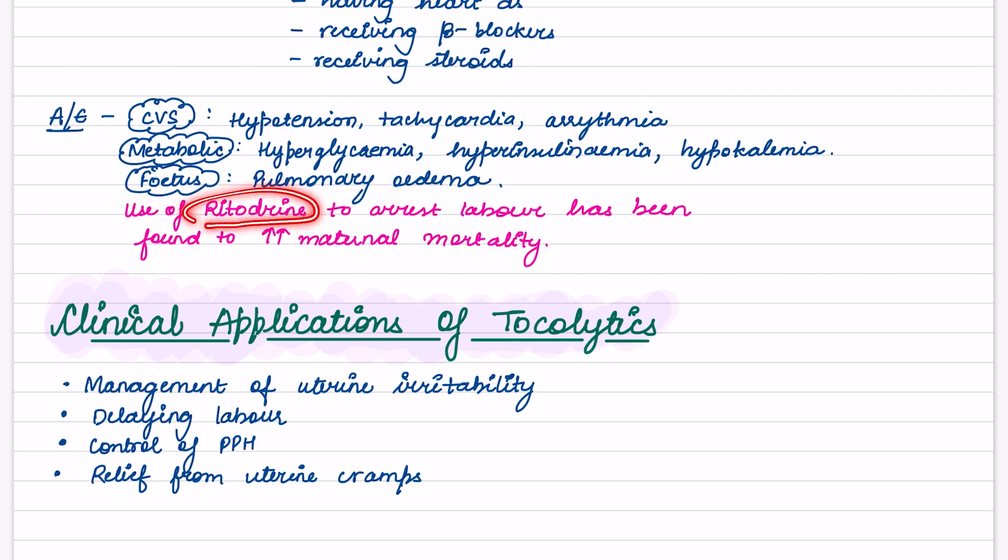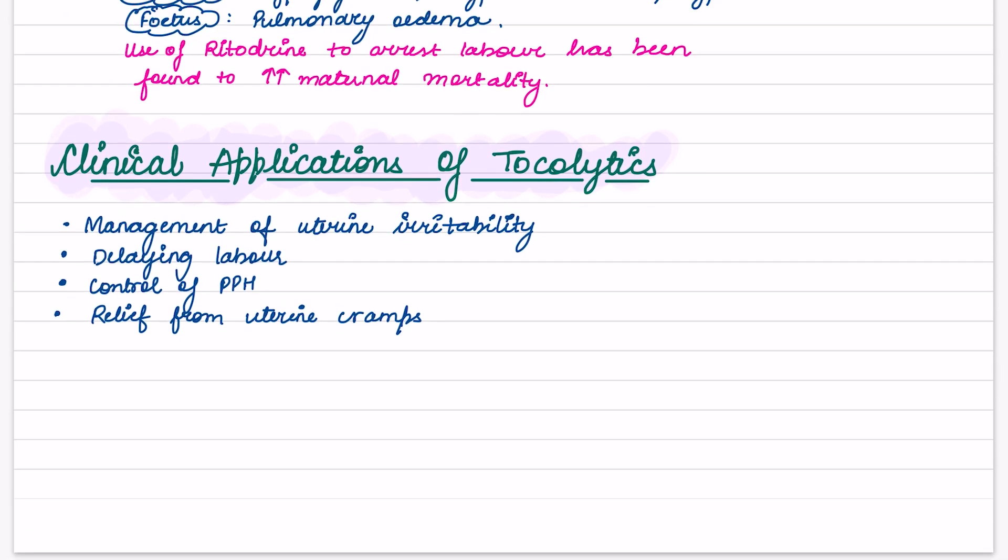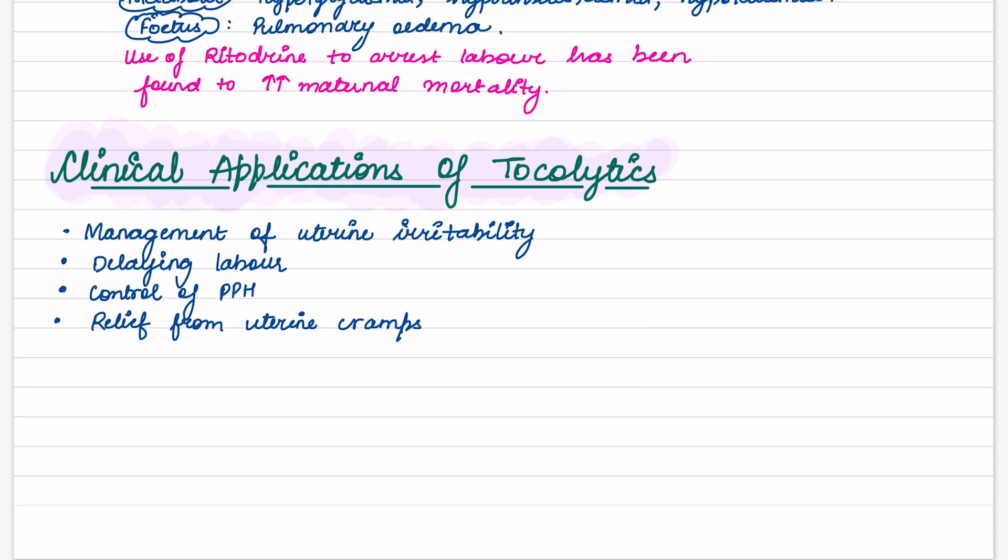Now, use of rytodrine to arrest labor has been found to increase maternal mortality. What are the clinical applications of tocolytics? They are used in the management of uterine irritability, delaying labor, controlling postpartum hemorrhage, and they provide relief from uterine cramps.